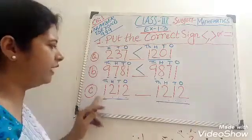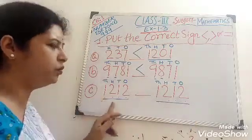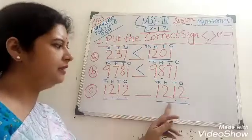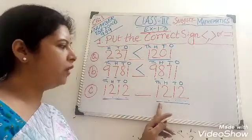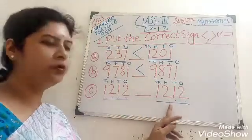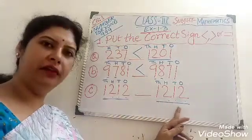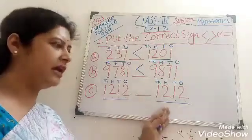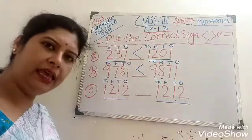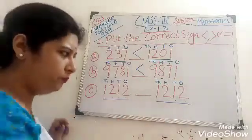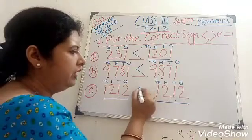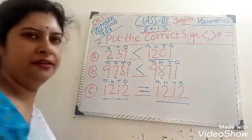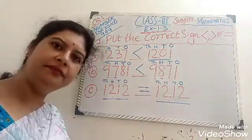Our number is 1,212. And on this side also 1,212. It means both sides the number is the same. So we put equal to sign here. Clear?